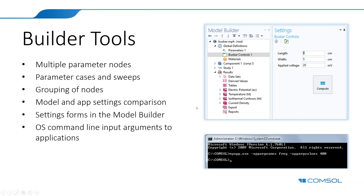There are infrastructure improvements in both the model builder and the application builder. In the model builder, you can now have multiple parameter nodes. This is useful if you have thousands of parameters and you want to organize them better — you can now group them into separate parameter lists. In previous versions you had to have all of them in the same list. This is probably one of the most requested features from the user community.